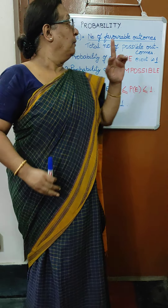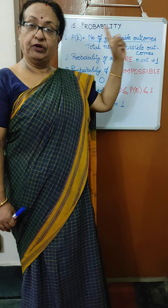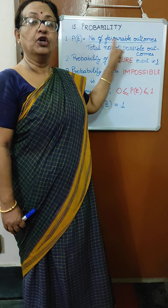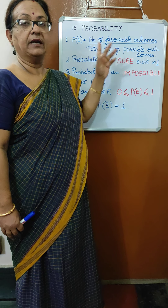Similarly, for rolling a die, the possible outcomes are 6: 1, 2, 3, 4, 5, or 6. Now suppose I want an even number. The even numbers are 2, 4, and 6 — so there are 3 favorable outcomes. Possible outcomes are 6. Therefore, the probability of getting an even number is 3 by 6, which equals 1 by 2.